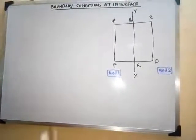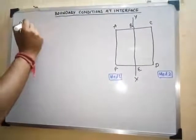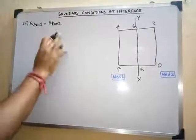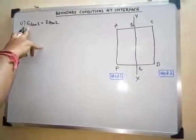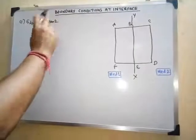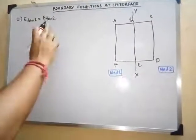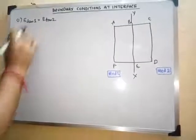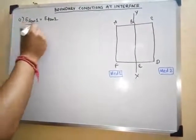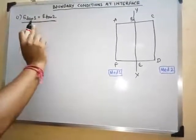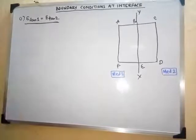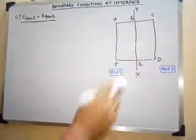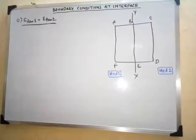The first boundary condition we will discuss is E_tan1 equals E_tan2. That means the tangential component of the electric field at medium 1 will be equal to the tangential component of the electric field at medium 2, where 1 and 2 refer to the two mediums. For this purpose we will define certain things in medium 1 and medium 2.